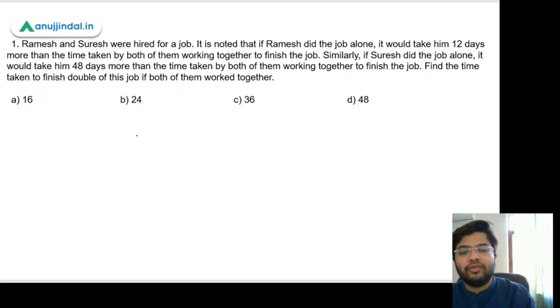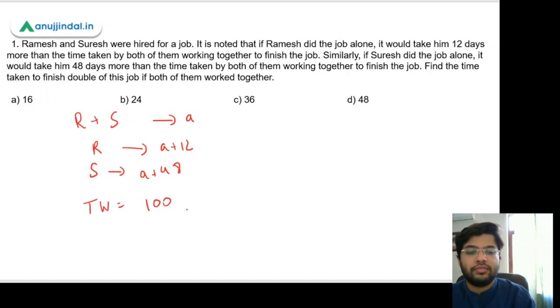So first we will do this with our basic method. Let's assume the time taken by both Ramesh and Suresh would be a days. So Ramesh alone can do this in a plus 12 days and Suresh alone can do this in a plus 48 days. And let's assume that the total work that they need to do is 100 units.